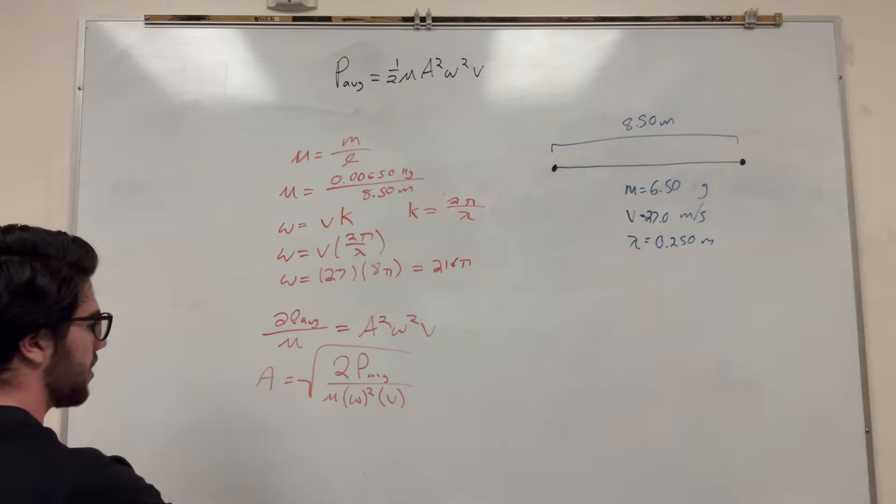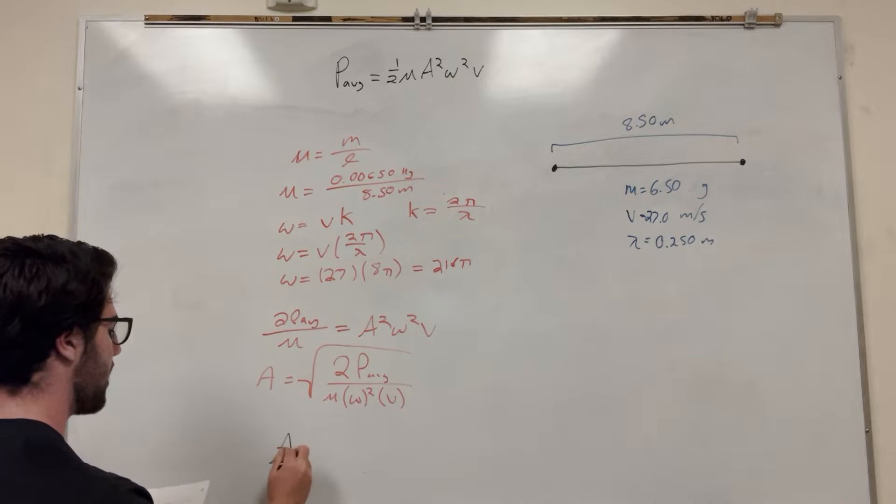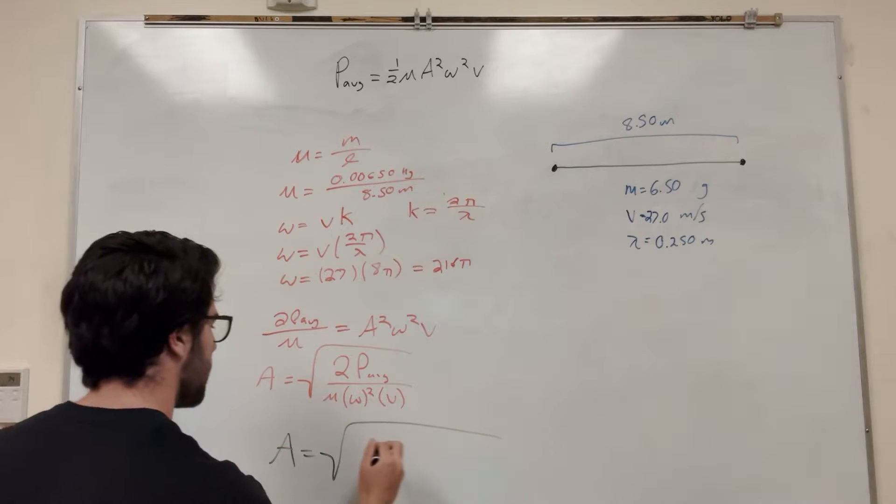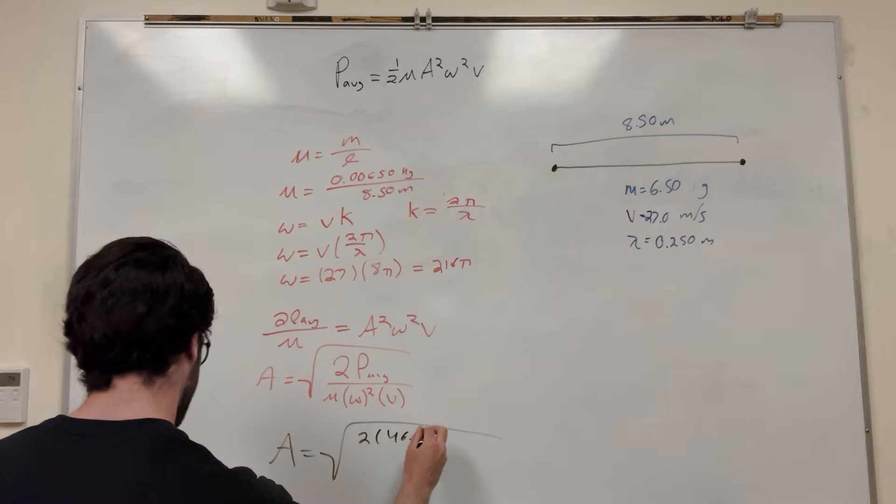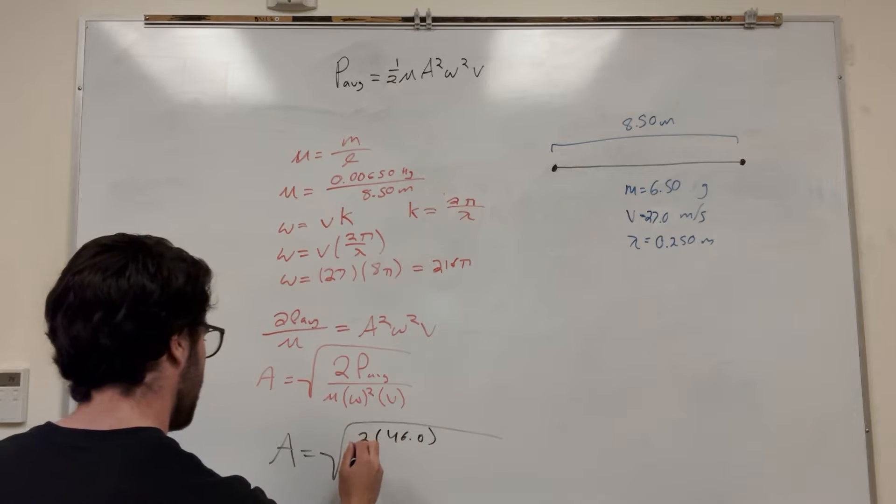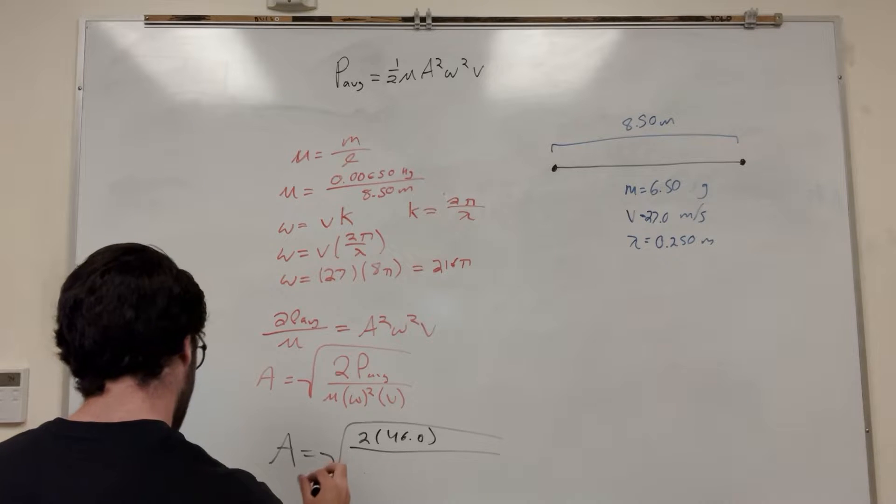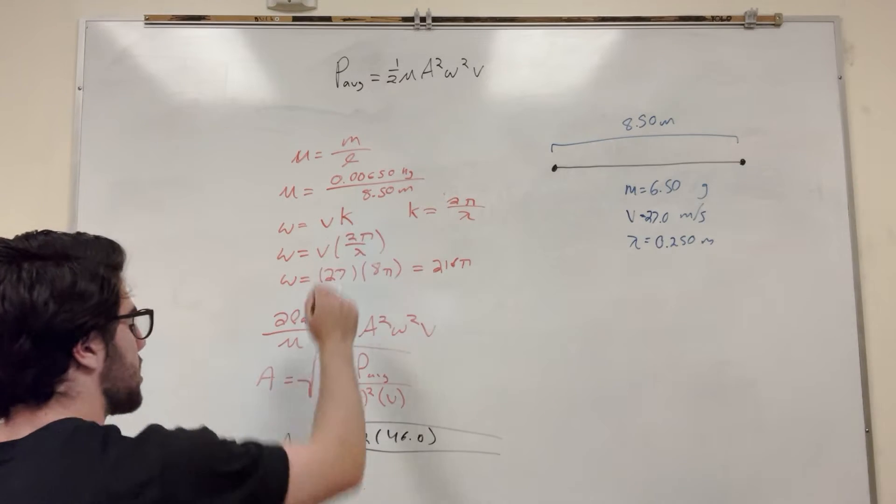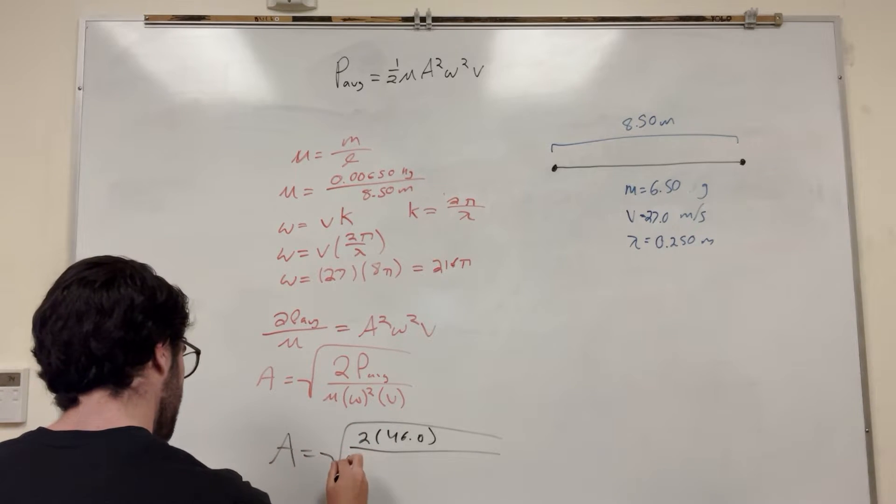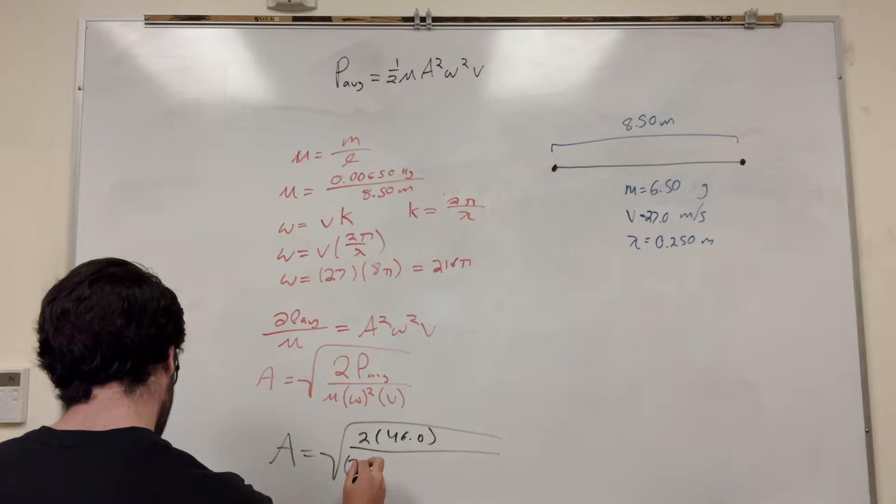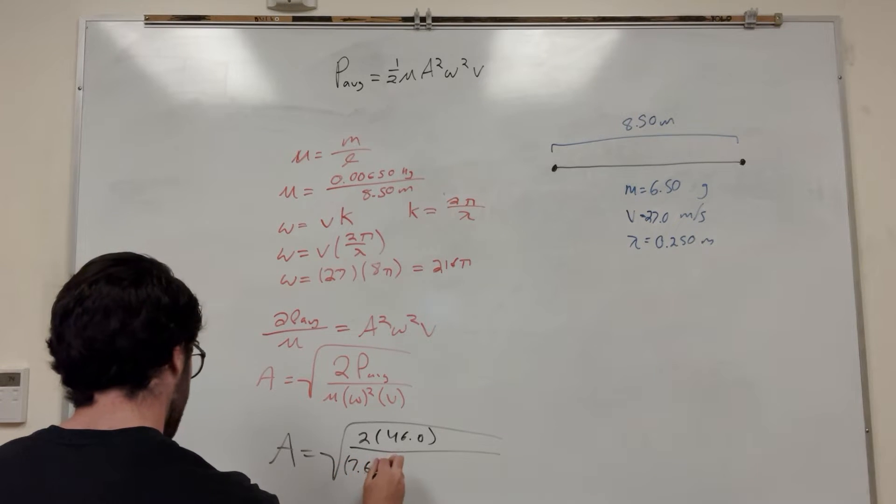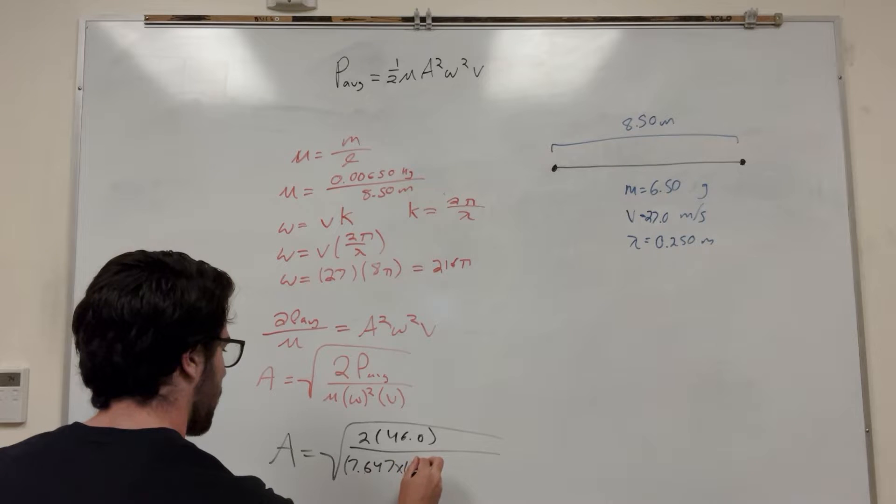So just plugging in all of our constants, basically, you get A is equal to the square root. So 2 times the average power, which is 46.0, divided by our mass per unit length, which ends up calculating to 7.647 times 10 to the negative 4.